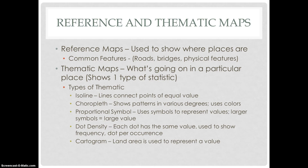Reference maps are used to show common features such as roads, bridges, and physical features. Thematic maps show what's going on in a particular location and generally show one type of statistic. There are five types of thematic maps: isoline maps, which contain lines that connect points of equal value; choropleth maps, which show patterns in various degrees using colors and shading; proportional symbol maps, which use symbols like circles or rectangles to represent values where larger symbols equal a larger value; dot density maps, where each dot has the same value and is used to show frequency; and cartograms, where land area is used to represent a specific value.